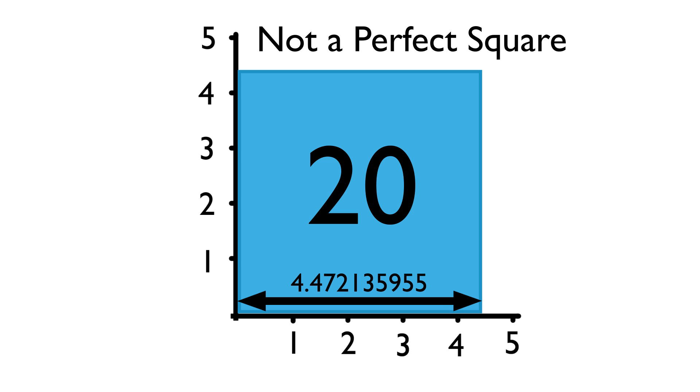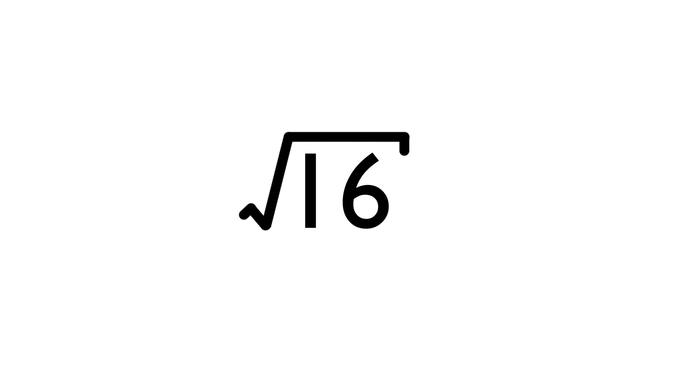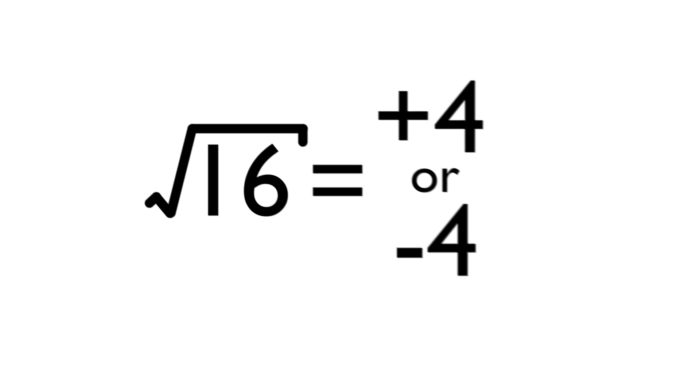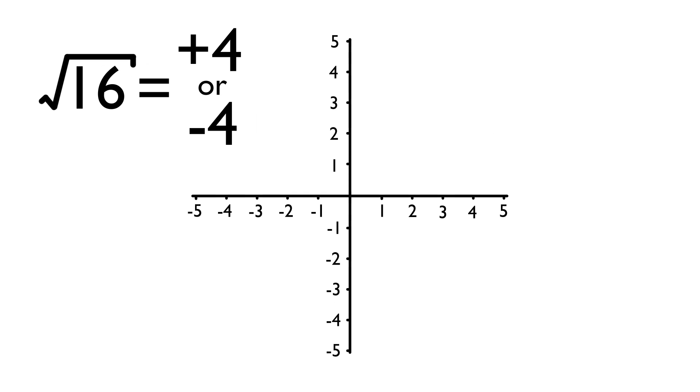Here's another interesting thing. The answer to a square root is always a little imprecise, as there are actually two answers, a positive and a negative one. So the square root of 16 is actually both plus 4 and minus 4.